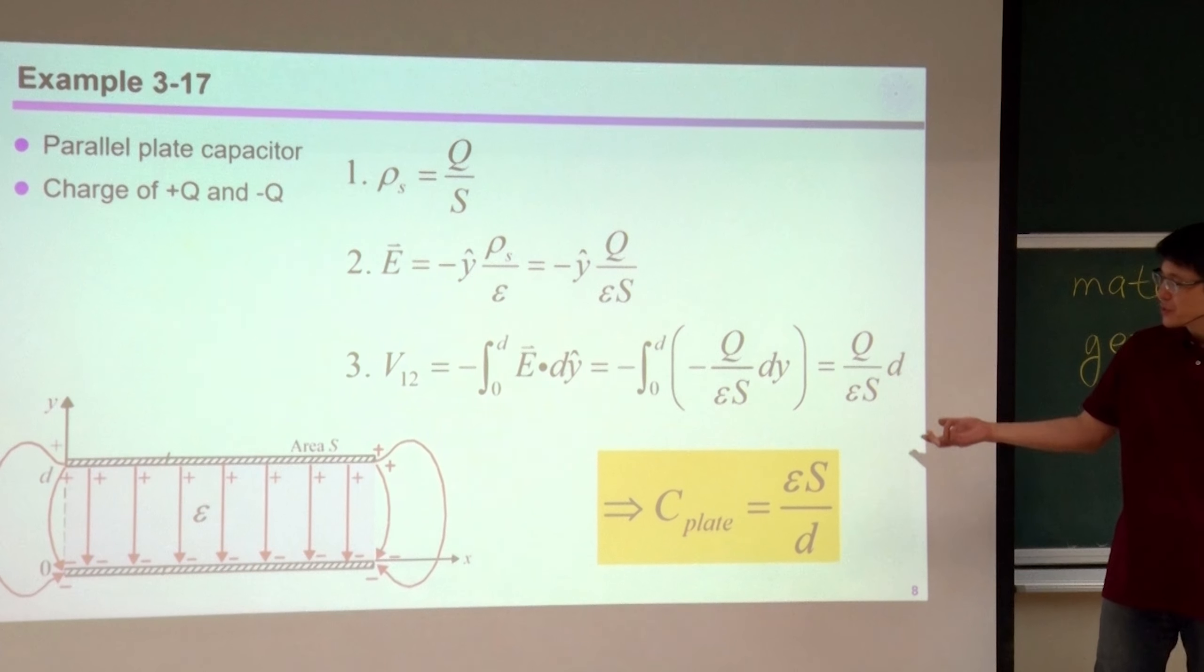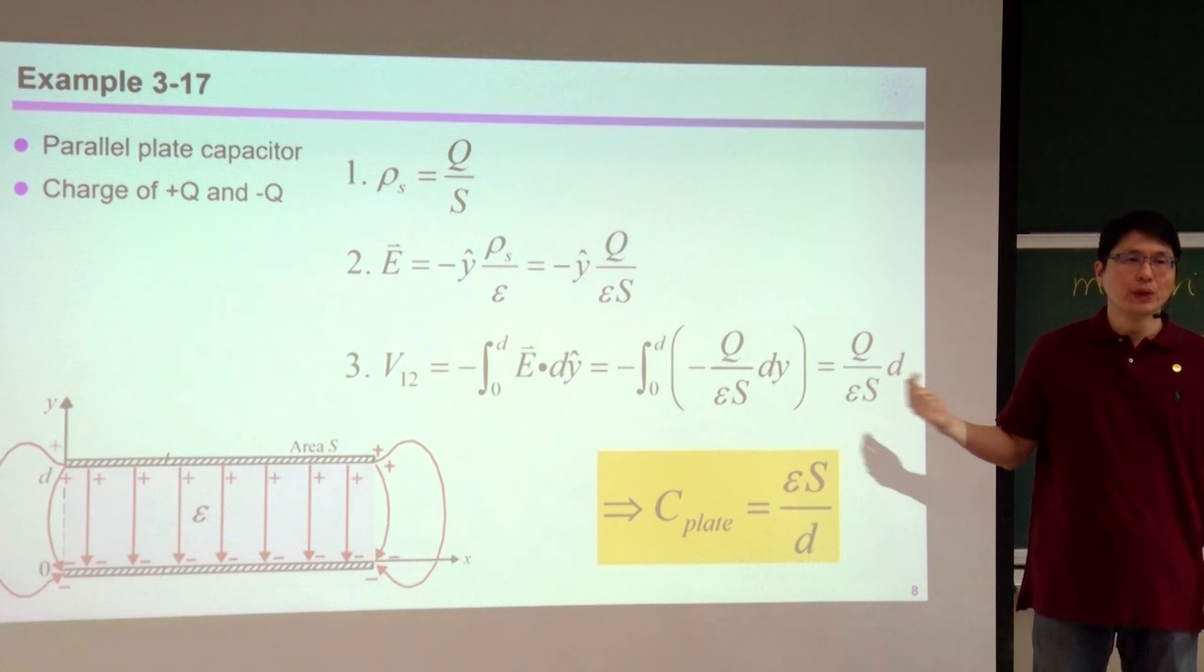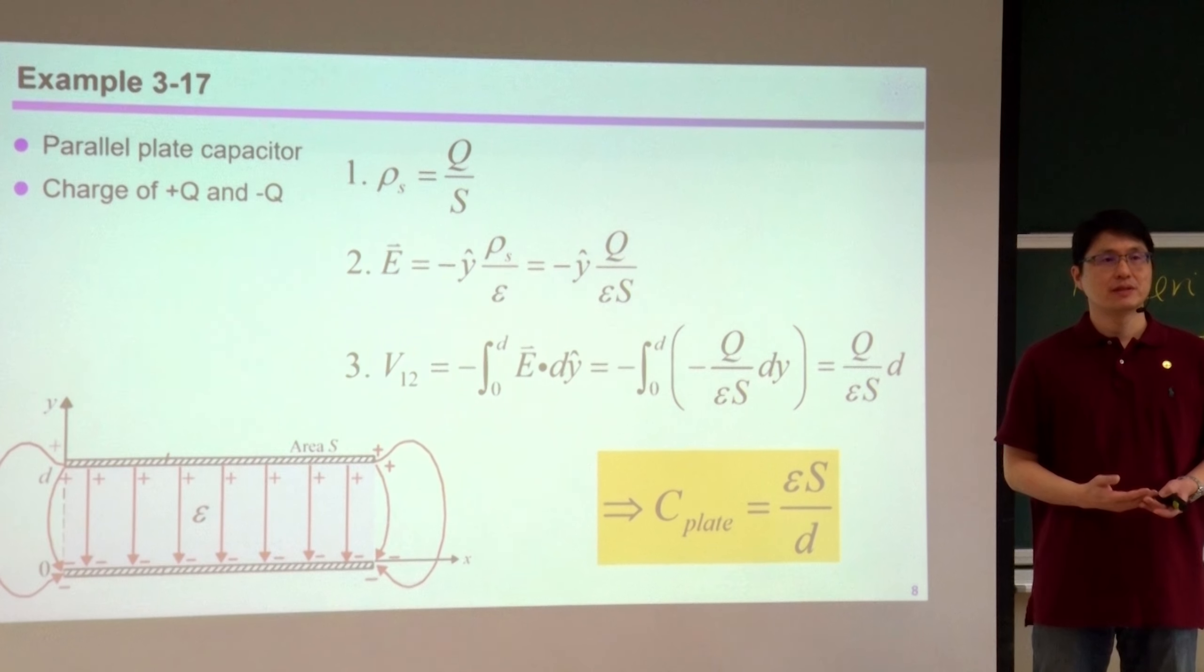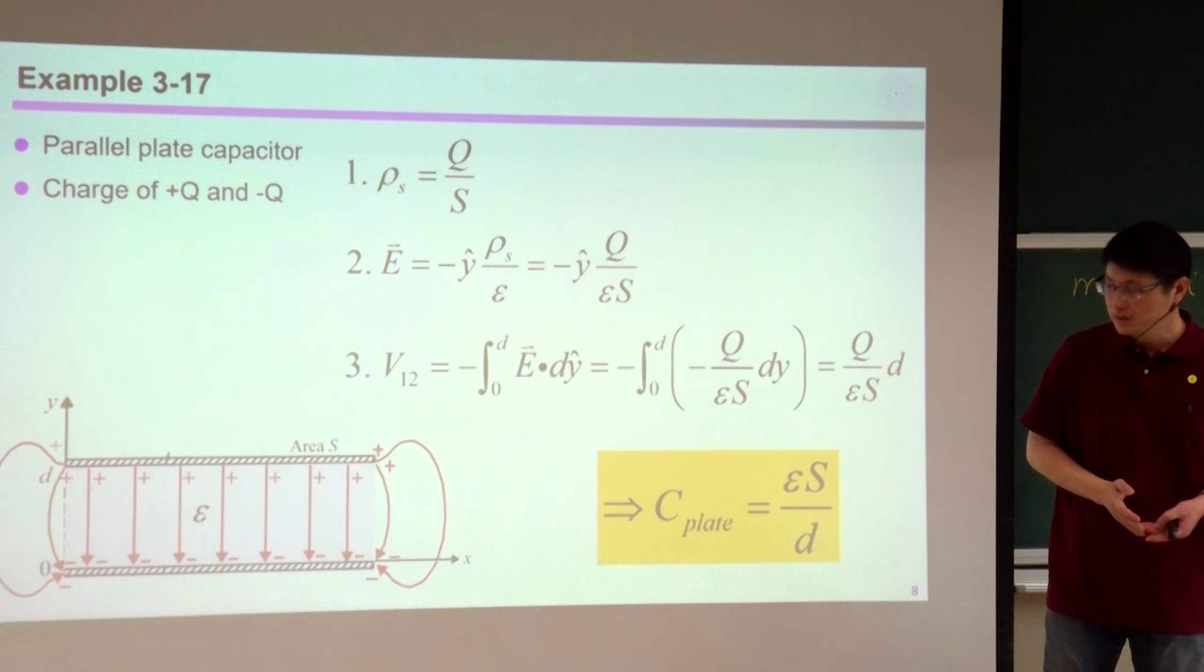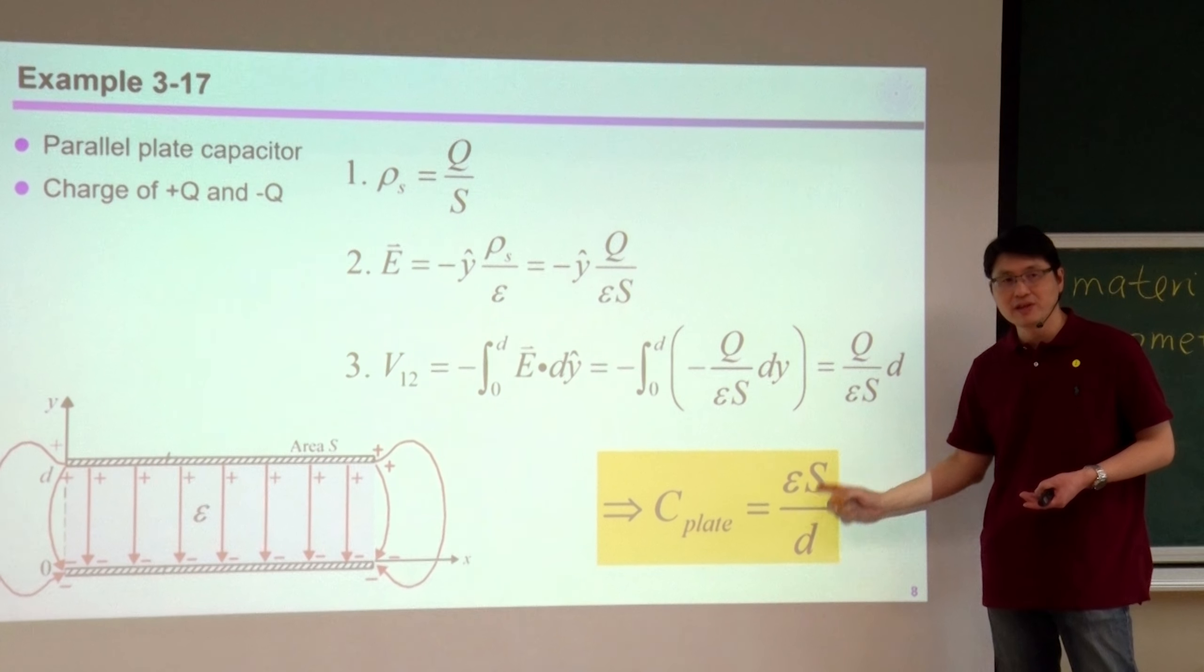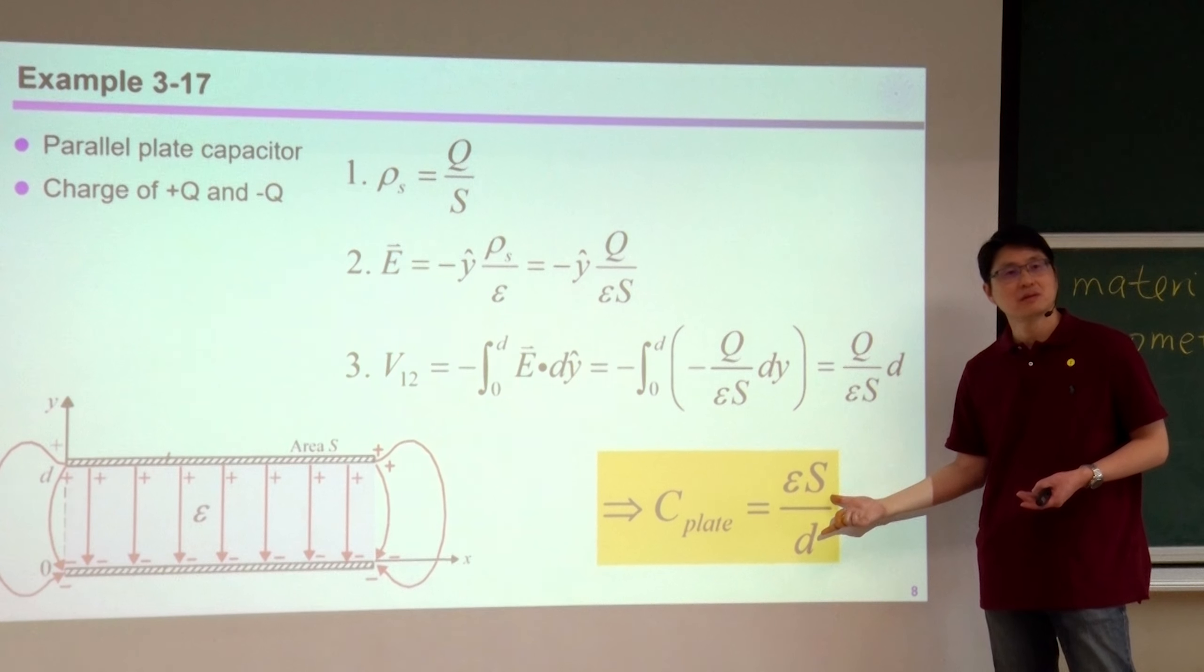Again, such a simple relationship, you have to know which one is giving you the material dependence, and which one of the parameters are telling you the geometric dependence. Epsilon is definitely material dependent. And these two together, the ratio of surface area to the separation is geometry.